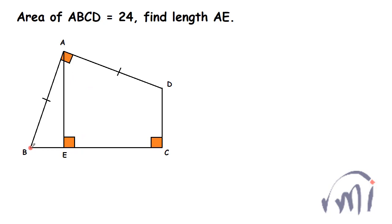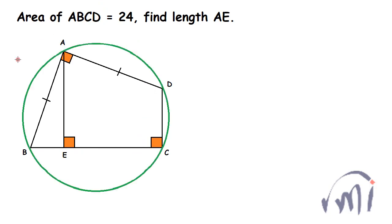If we see properly, angle BAD and angle BCD both of them are equal to 90 degrees, and AE is perpendicular to side BC. Since the sum of two opposite angles is equal to 180 degrees, this is a cyclic quadrilateral. That means you can draw a circle which will pass through all four points A, B, C, and D. Since angles BAD and BCD are both 90 degrees, the line joining points B and D will be the diameter of the circle, and its midpoint will be the center.